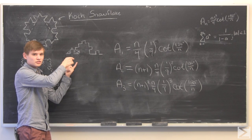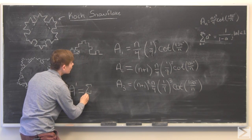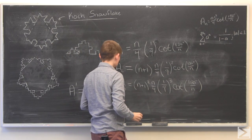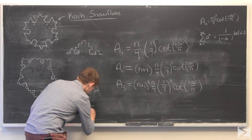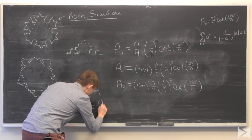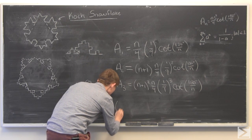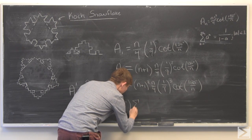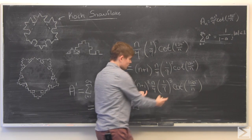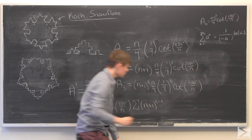Taking these iterations to infinity, we call A-prime that total area, and it is just the sum from i equals 1 to infinity of A_i. We can rewrite this by factoring out the common terms: each term contains n over 4 and cotangent of 180 degrees over n. Putting the remaining part in summation notation, we have (n plus 1) to the power i minus 1, and 1 over 9 to the i-th power. Note there is no n plus 1 factor in the original term, which is why we write it as i minus 1.